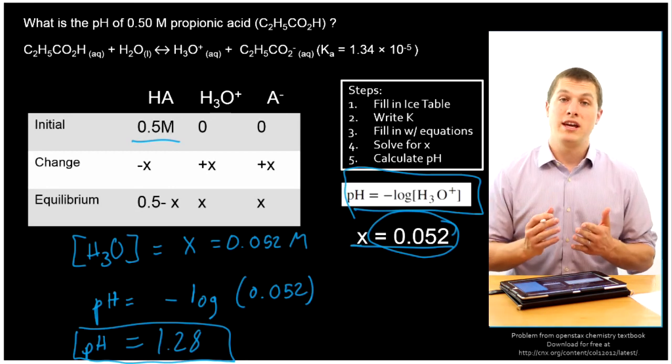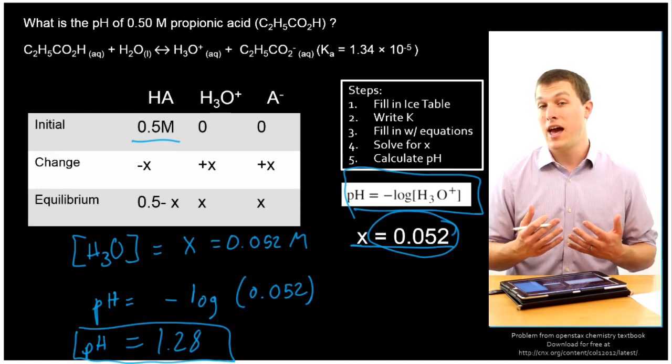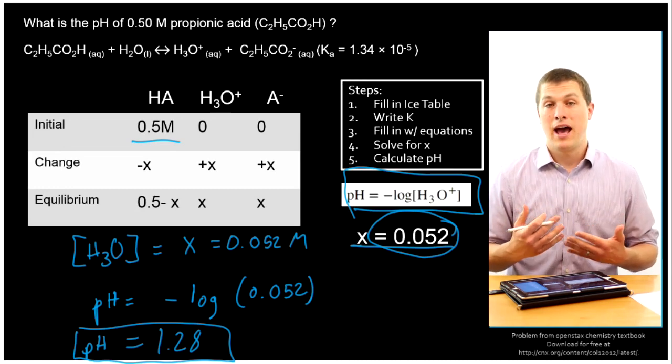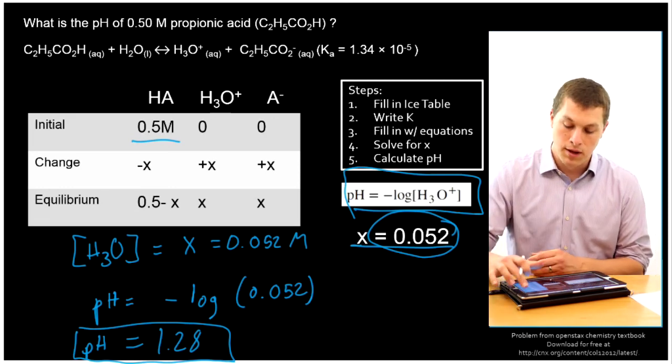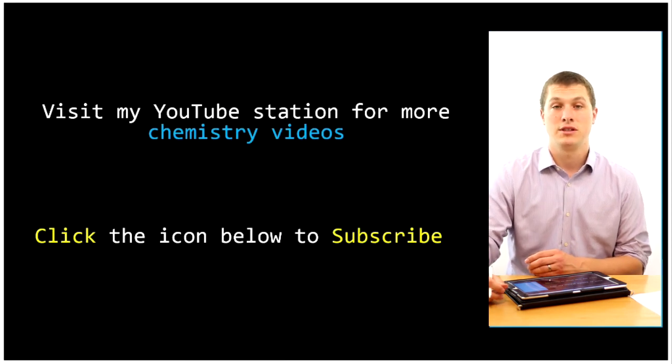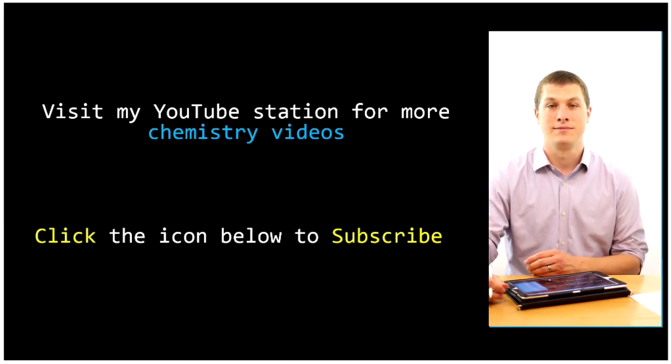So when you have a weak acid or a weak base, you have to use your Ka value to determine how much of your hydronium ions you're going to have around at equilibrium. Thank you for watching this episode of Real Chemistry. If you have any questions, ask them below. You can always subscribe by clicking on the banner down there. Thanks for watching.